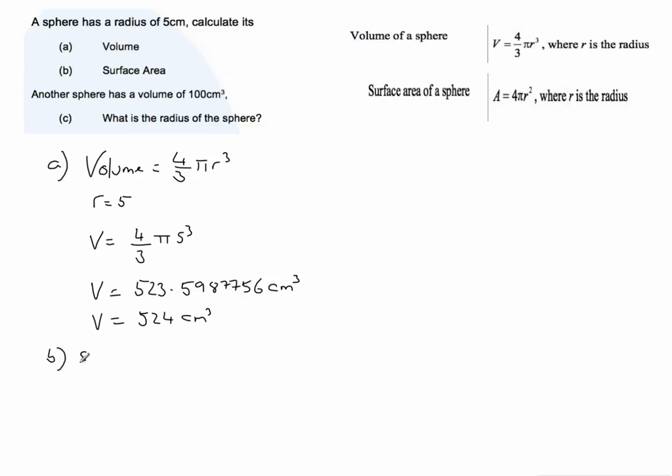we need the formula that the surface area is given by four pi r squared. And it's exactly the same process. We're going to substitute r equals five into that formula.